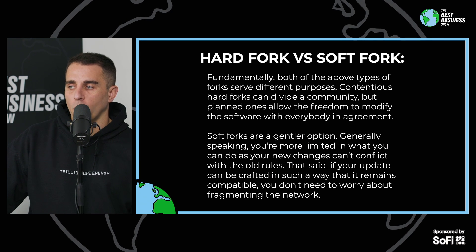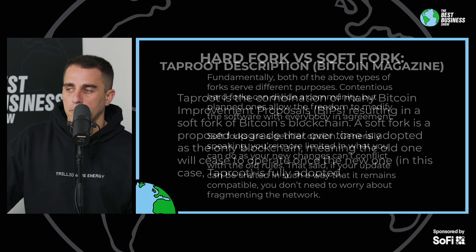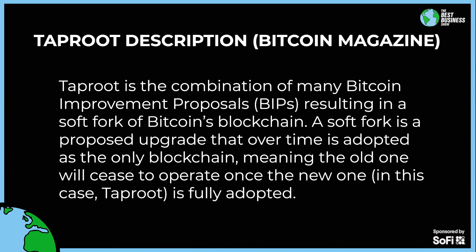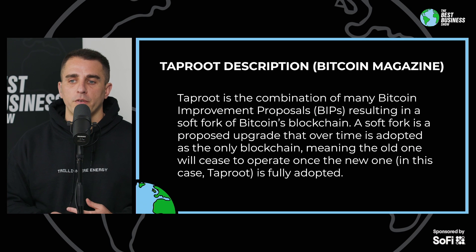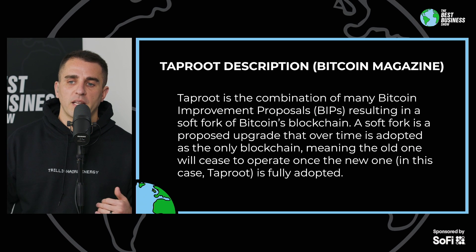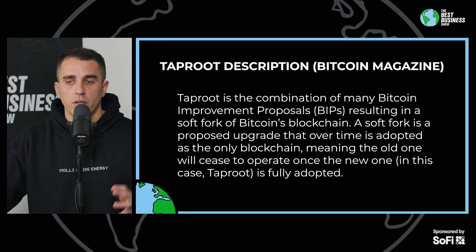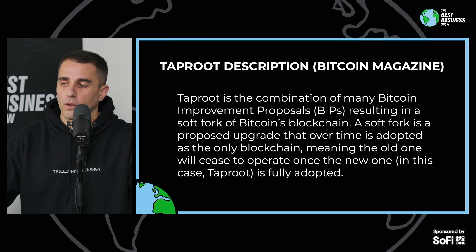That is what we are watching with the Taproot upgrade. According to Bitcoin Magazine, Taproot is a combination of many different Bitcoin Improvement Proposals, or BIPs, resulting in a soft fork of Bitcoin's blockchain. Taproot is a soft fork — a gentle option with agreement of everyone. It is a proposed upgrade that over time is adopted as the only blockchain, meaning the old one will cease to operate once Taproot is fully adopted.